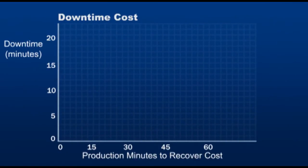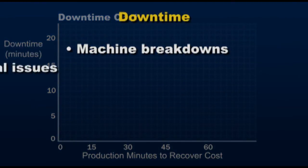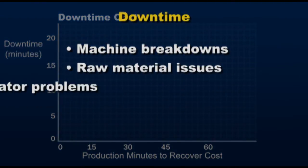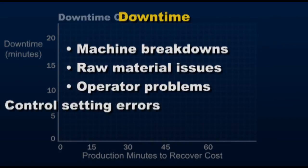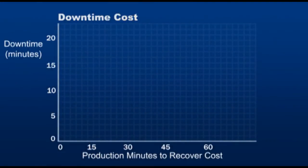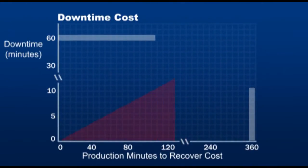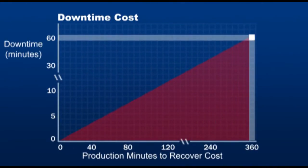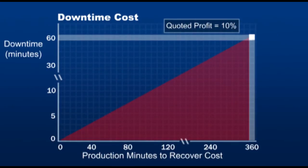Downtime is any interruption in production. It could be machine breakdowns, raw material issues, operator problems, control setting errors, or any other cause. A five-minute downtime will take 30 to 40 minutes of good production to pay for that five minutes. An hour delay costs about six hours of good production to pay for the delay.